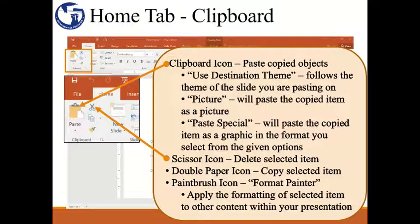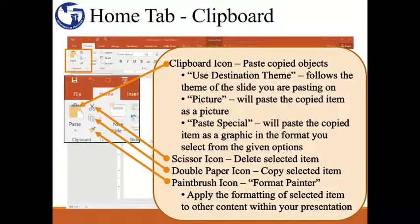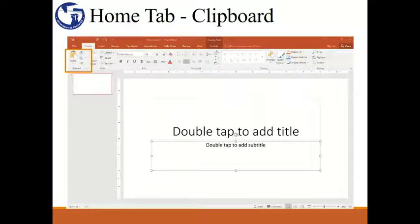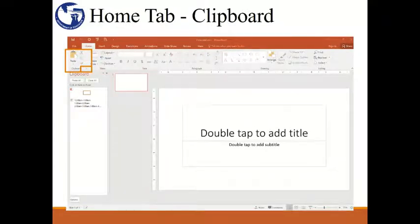The scissor icon is the cut command and will delete the item or items that you have selected. The double paper icon is the copy command and will copy the item or items that you have selected. The paint brush icon is the format painter tool and will allow you to apply a selected formatting to other content in your presentation. Just as with other Microsoft applications, there may be a little arrow at the corner of different command groups. If you click on this arrow, it will open up its own command group box. When you click on the clipboard group arrow, this is what you'll see. When you copy any object, even in other applications, it'll be available in what's called a clipboard. Once opened, you can click on an item on the list to paste it on a slide.